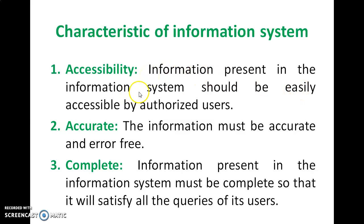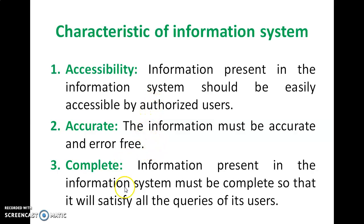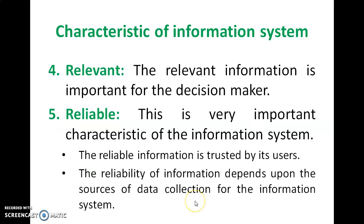Information present in the information system should be easily accessible by authorized users. Accurate — it must be accurate and error free; that is another characteristic of your information system. Complete — the information present in it must be complete so that it will satisfy all the queries of its users.